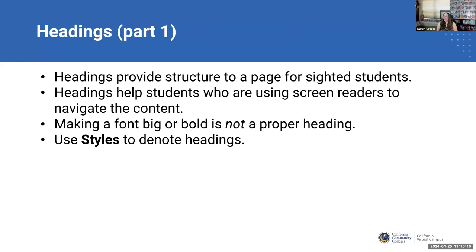So let's dive into a couple of the things that can make our Word documents more accessible. The first thing we're going to talk about is headings. With accessibility in general, we think about how this will help somebody who is visually impaired or blind and using a screen reader. That's a really important person to consider. But one of the things I've found is that the things I do to help those with vision issues actually tends to help everyone, and headings are a really good example of this.